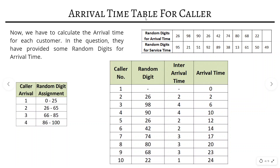Now we calculate the arrival time table for callers — caller numbers 1 to 10, because there are 10 service times available. We never assign a random digit to the first caller; we assume the arrival time is 0. For the second caller, random digit 26 belongs to category 2, so inter-arrival time is 2 and arrival time is 0+2=2. For the third caller, digit 98 gives inter-arrival time 4, so arrival time is 6. We continue filling all values similarly.